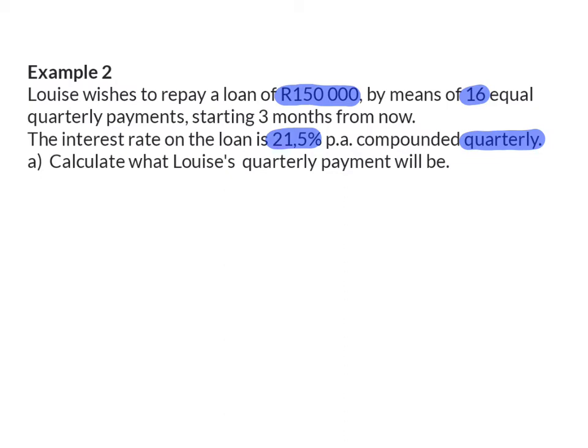Here we are given that she wants to repay a loan of R150,000, which will be our present value, by means of 16 equal payments, and that will be n. We are also given the interest rate of 21.5%. It is important to realize that Louise will be making quarterly payments, and quarterly means every three months. That is why it's important that the interest rate is also compounded quarterly.